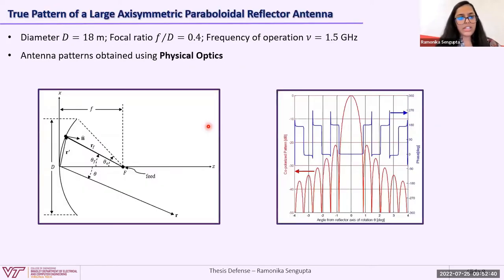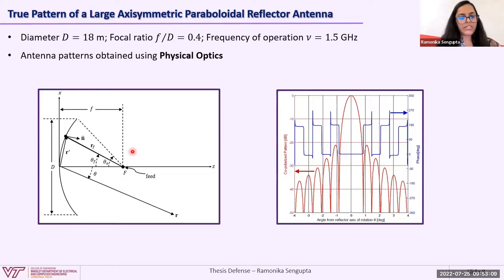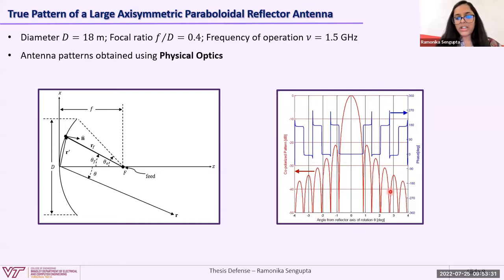Starting with the true pattern of a large axisymmetric paraboloid reflector antenna: the reflector used has a diameter of 18 meters, focal ratio 0.4, and operates at 1.5 GHz. The cross-section for the reflector system is shown. We have considered a Huygens source as the feed, to eliminate the cross-polarized component in the reflected electric field so we only have the co-polarized component. The antenna patterns have been obtained using physical optics, showing the co-polarized pattern — its normalized magnitude and phase with respect to angle from the reflector axis theta. This pattern is used as the true pattern for adaptive pattern modeling methods.